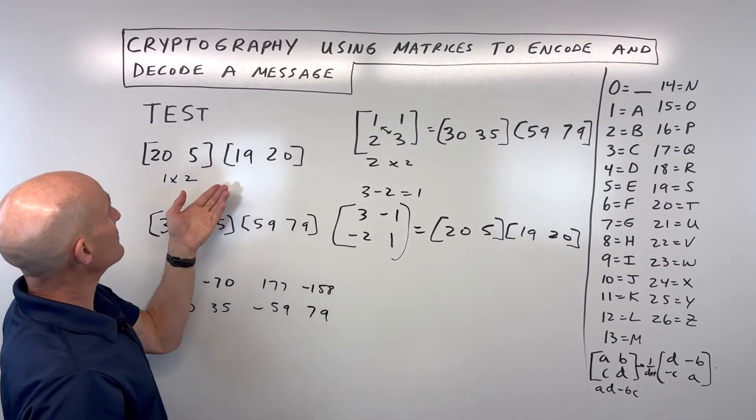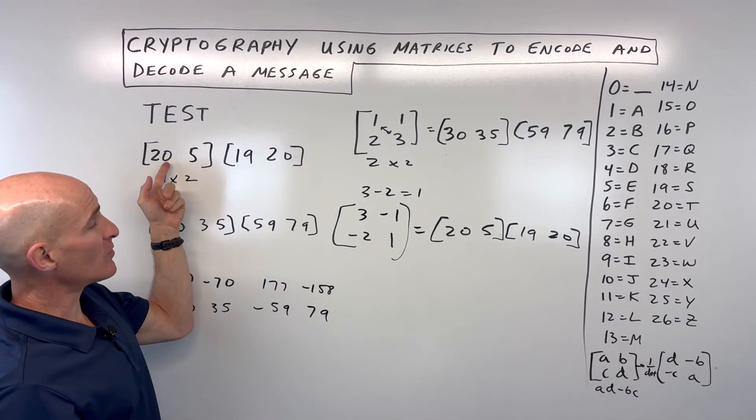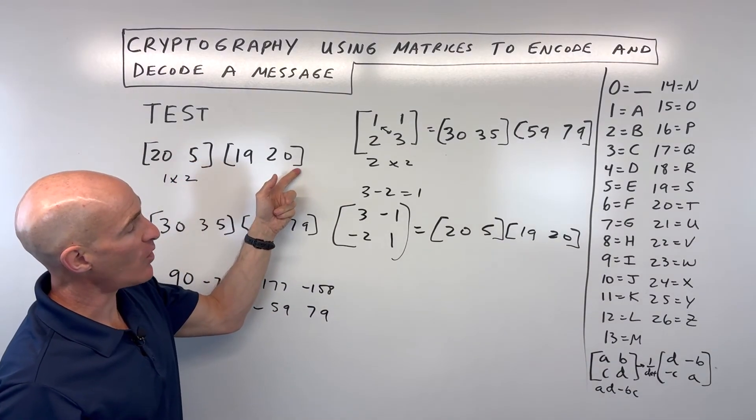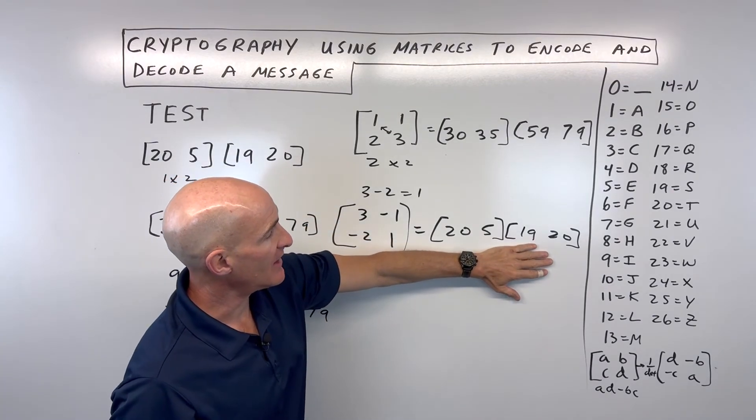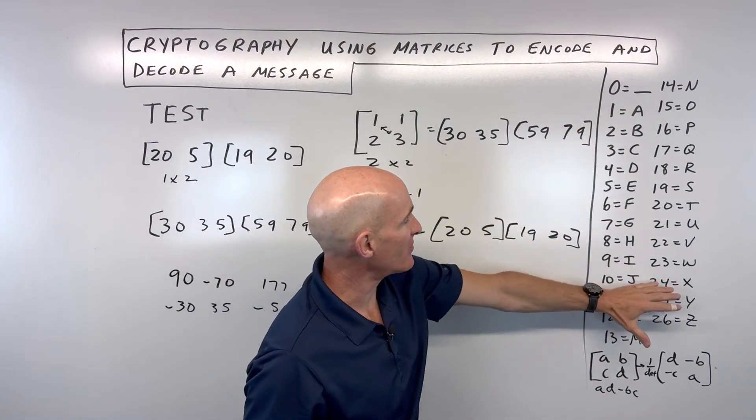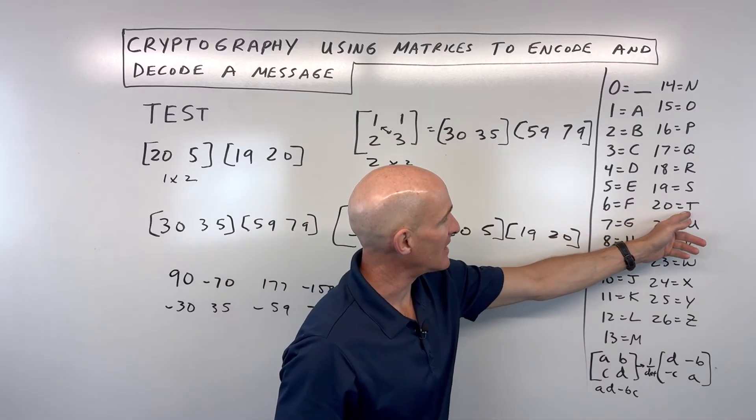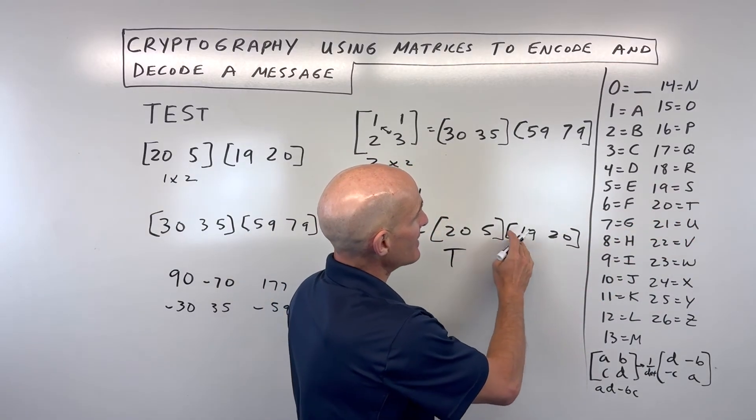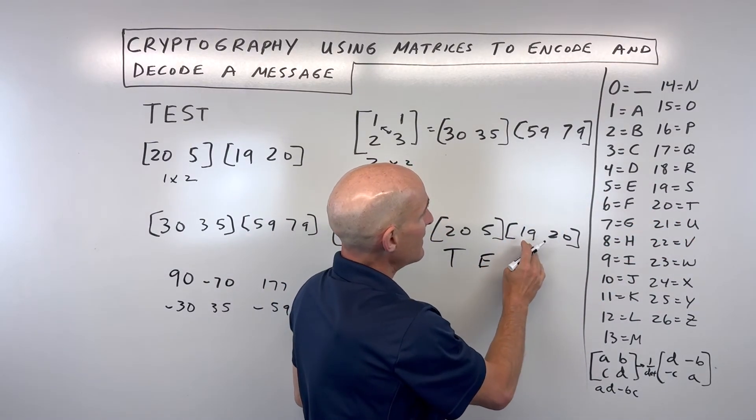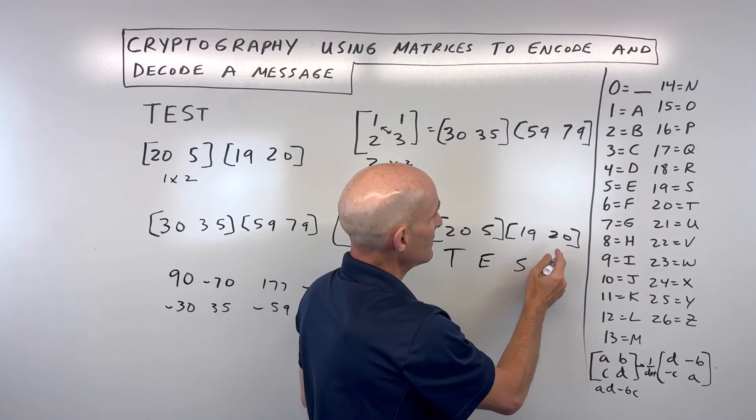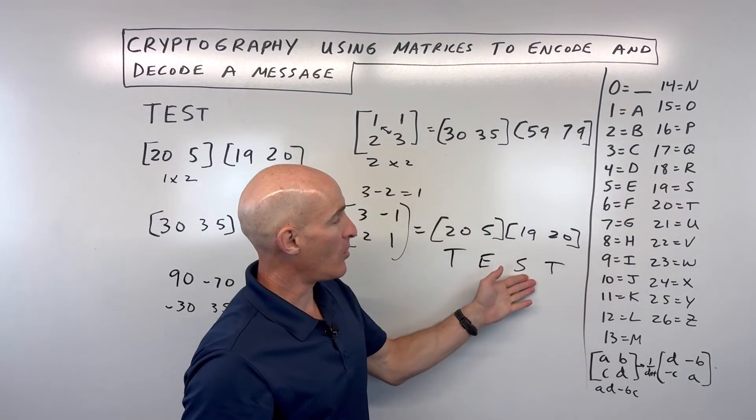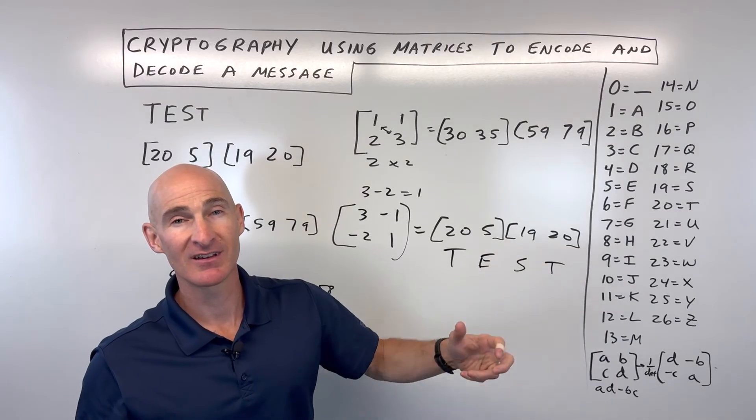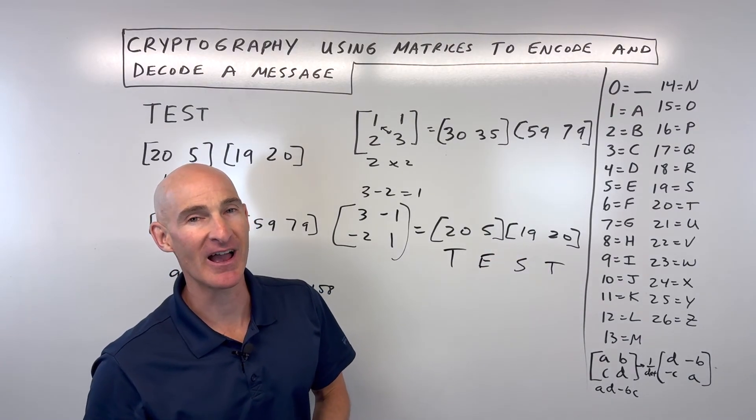And now you can see we're getting back the original matrices that we started with: 20, 5, 19, 20. So if your friend now goes to this chart, they can say, okay, 20 is T, 5 is E, 19 is S, 20 is T. And they can see, oh, okay, my friend sent me the message. You know, there's a test coming up in your class.